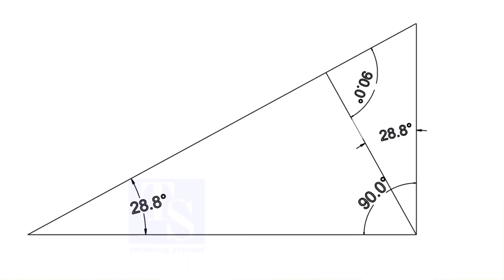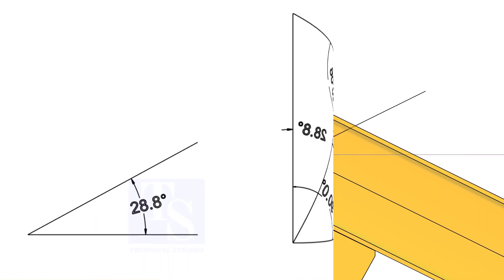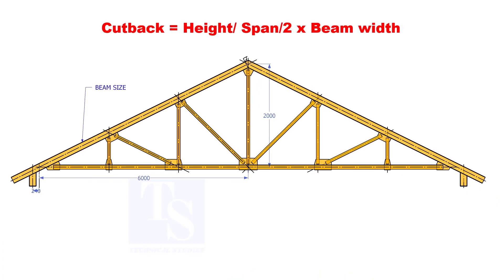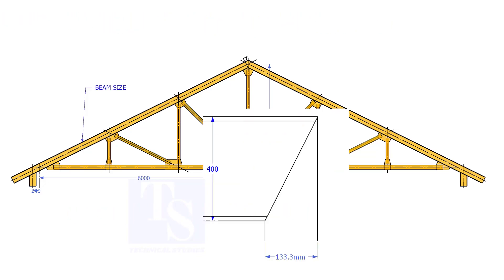Basically, the formula is based on the theory that opposite angles are equal. The cutback is truss height divided by half span, multiplied by the actual width of the girder. Proportionate to the span and the height, the cutback for a 400 mm wide beam is 133.3 mm.